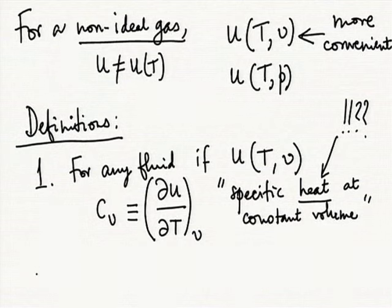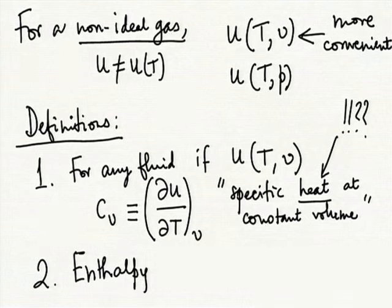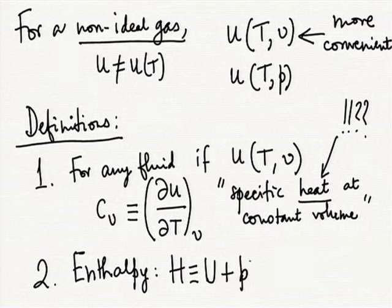Historically we will continue to call it specific heat at constant volume, but by definition it has nothing directly to do with heat interaction. This is the first definition. The second definition is that of enthalpy: H is defined as U + PV, giving specific enthalpy h = u + Pv. C_V depends on two variables for a general gas. If there is a term (∂u/∂T), there must also be a term (∂u/∂v). The term (∂u/∂T) at constant volume is defined as C_V.